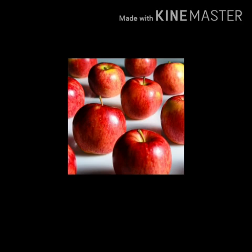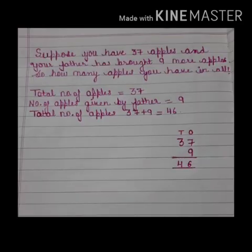Now suppose children, you have 37 apples and your father has bought 9 more apples. So how many apples do you have in all? To find out the total number of apples, we will add. You were having 37 apples and 9 more apples are added. So 37 plus 9 will give you 46. So we have 46 apples in all.